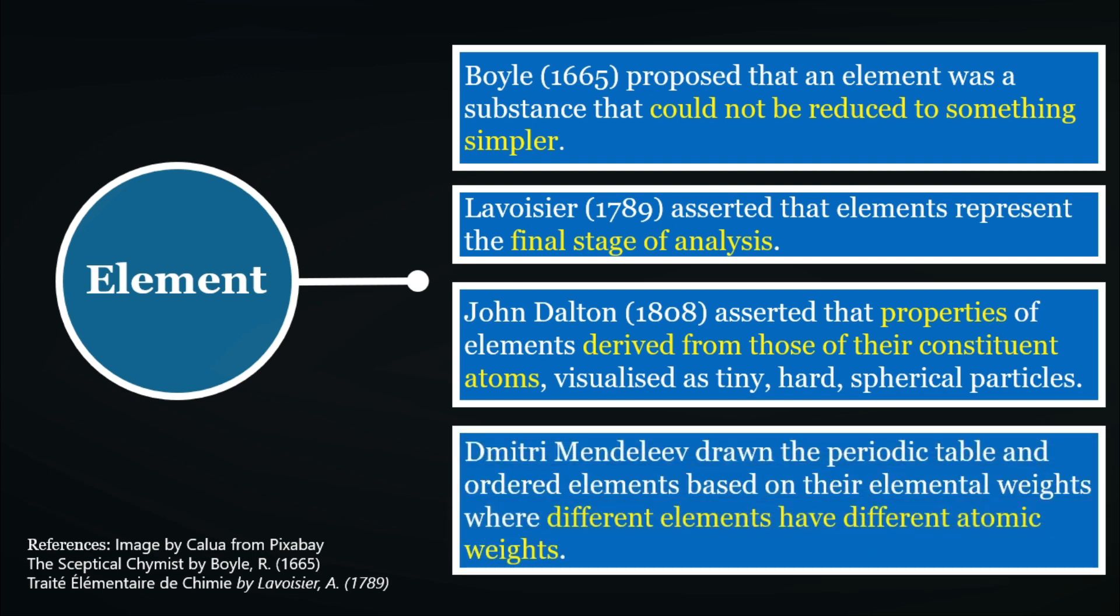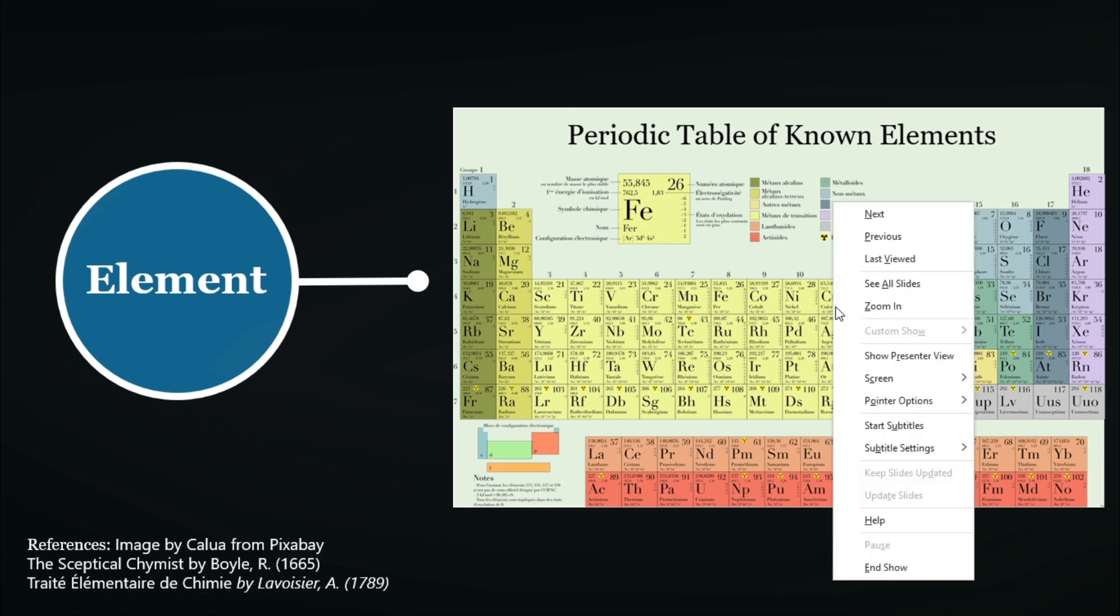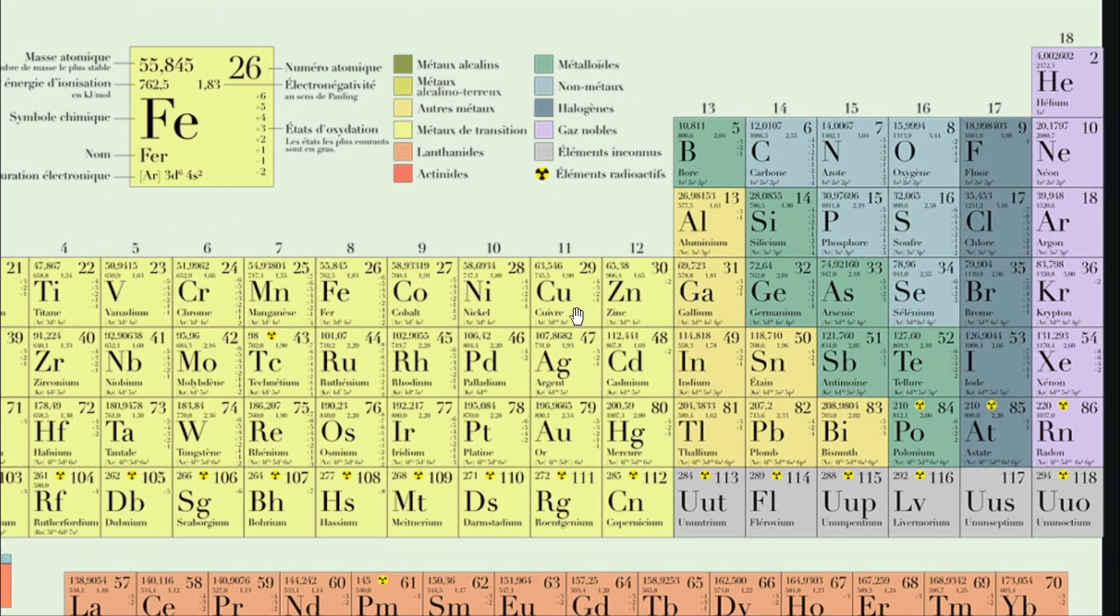And in Mendeleev's time, the periodic table is drawn which arranges these elements according to their unique elemental weights. Now, let's look into the periodic table. Let's say we have the element copper. According to Boyle, it cannot be reduced to something simpler. Basically, this means that copper cannot be made by combining other elements found in this periodic table. In other words, it is the final stage of analysis.